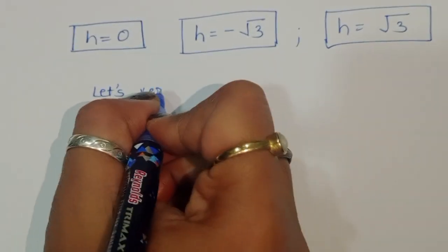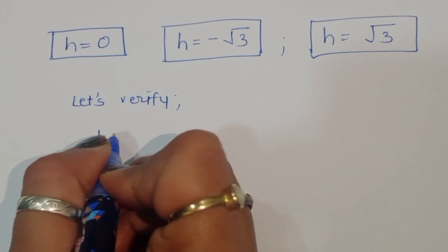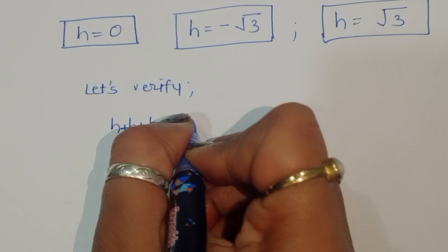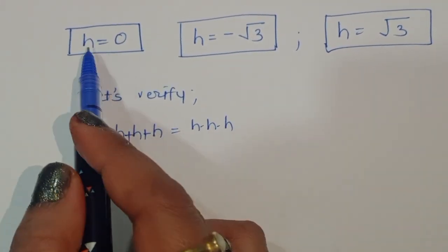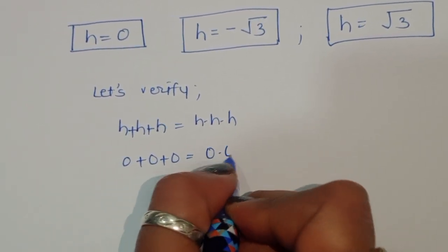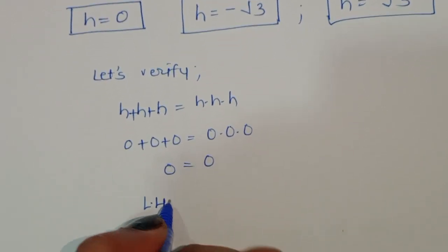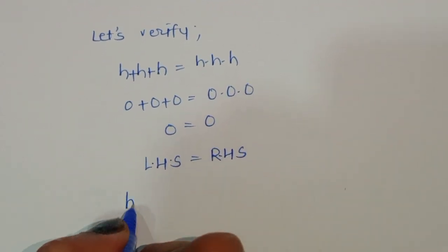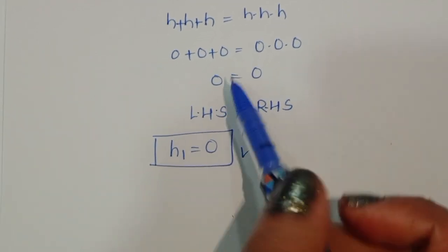Now let's verify each solution. Substituting h equals 0 into h plus h plus h equals h times h times h: 0 plus 0 plus 0 equals 0 times 0 times 0, so 0 equals 0. LHS equals RHS, so h equals 0 is a correct solution.